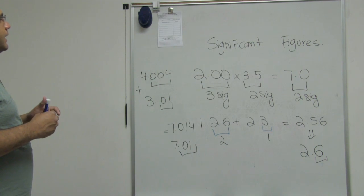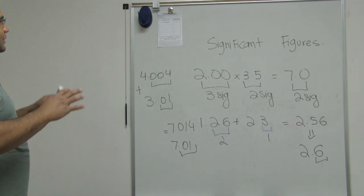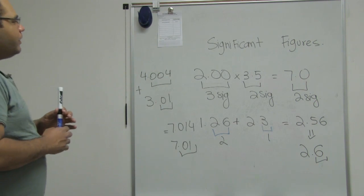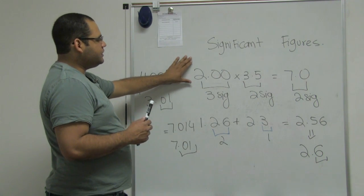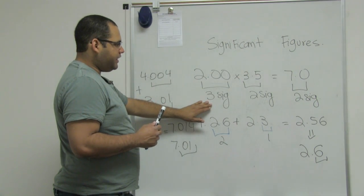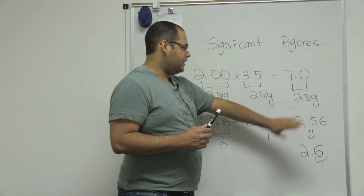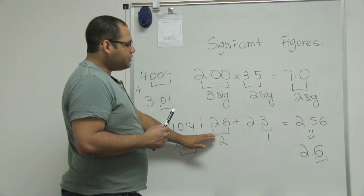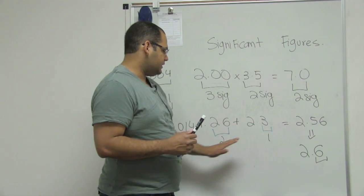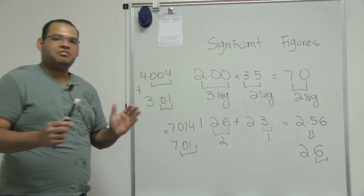Sig figs is something that always bothers students. But if you keep in mind: when doing multiplication or division, you always check how many sig figs and keep the least number of sig figs. When doing addition or subtraction, you always count the number of decimal places and keep the least ones. You should be fine.